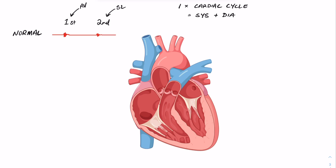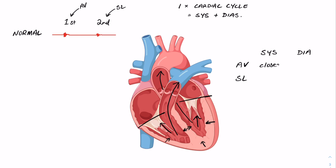Just a quick reminder: one cardiac cycle is composed of a systolic and a diastolic phase — a contraction and a relaxation. Let's understand what the valves are doing during each phase. Starting with systole, when the ventricles contract, this causes a pressure difference between the atria and the ventricles, which causes the atrioventricular valves to snap shut. The point of contracting the ventricles is to eject blood out of the heart, pushing it up the pulmonary trunk and up the aorta, so the semilunar valves will be open. Let's keep this in a tabulated form off to the right.